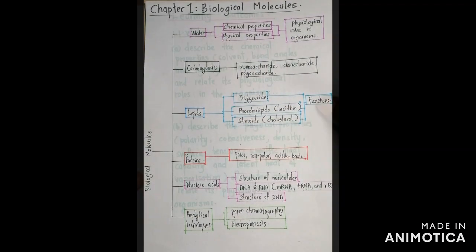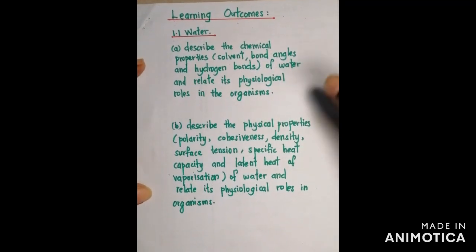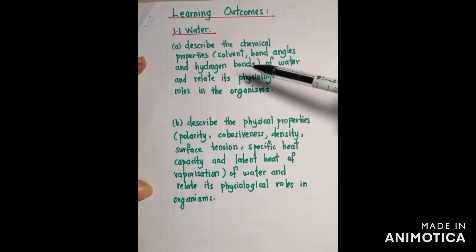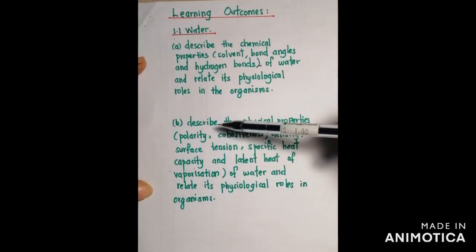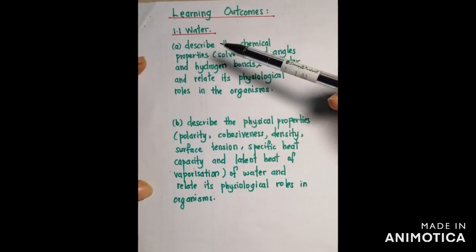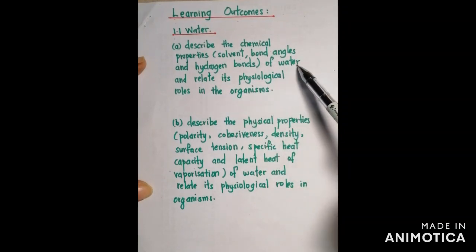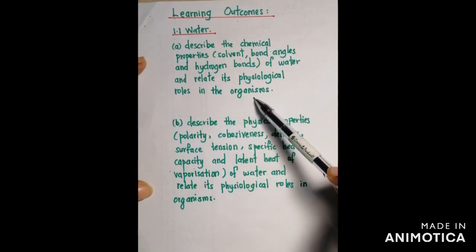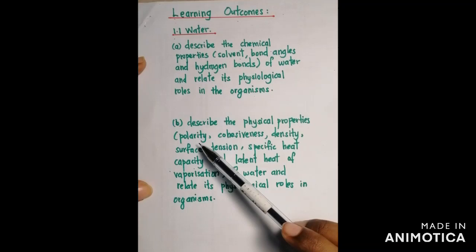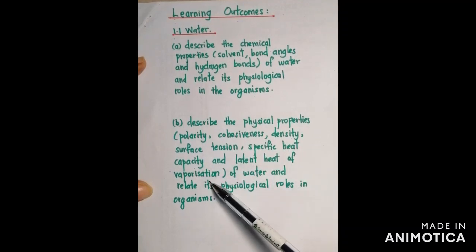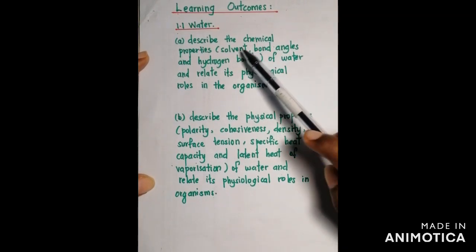Now we will see the learning outcomes of this subtopic. These are very important because according to the Cambridge syllabus, most questions will be asked from these learning outcomes. For (a): describe the chemical properties — solvent, bond angles, and hydrogen bonds of water — and relate its physiological roles in organisms. For (b): describe the physical properties — polarity, cohesiveness, density, surface tension, specific heat capacity, and latent heat of vaporization — and relate its physiological roles in organisms.